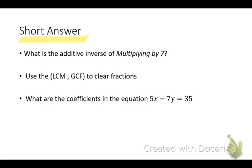Haley, let's start with you. What is the additive inverse of multiplying by seven? Divide by seven. Would I use the LCM or the GCF to clear fractions? LCM, the lowest common multiple, so our denominators will cancel. What are the coefficients of the equation? Five and negative seven. Remember, the coefficient is the number connected to a variable in that term. Great job, Haley.